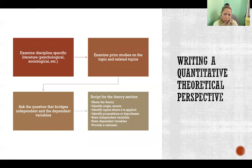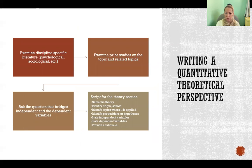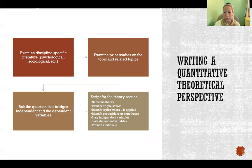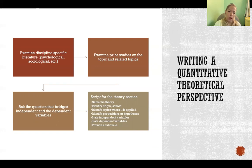When writing your manuscript or proposal, start with a literature review. Examine the literature in your specific discipline and find relevant papers and studies related to your topic and neighboring topics. It's possible that the theory hasn't been applied before to your specific topic — which makes it a great study for you to conduct. You might find prior application of the theory in your area or in neighboring areas, as long as those studies help support the use of that theory for your study. Then you'll ask a question that bridges the independent and dependent variables based on that theory.